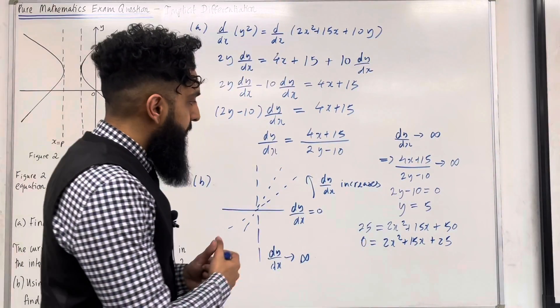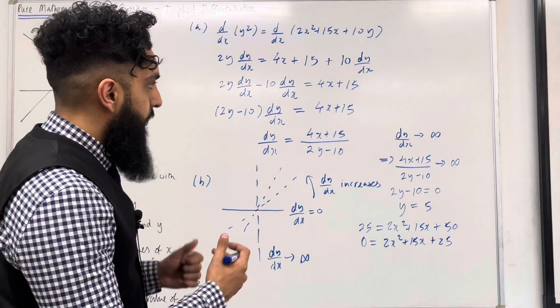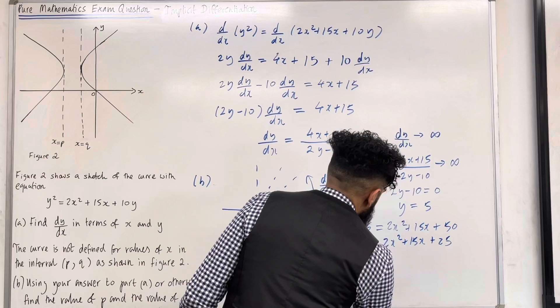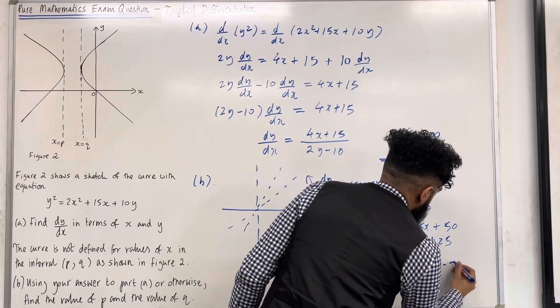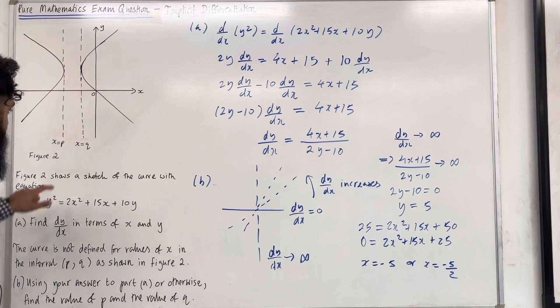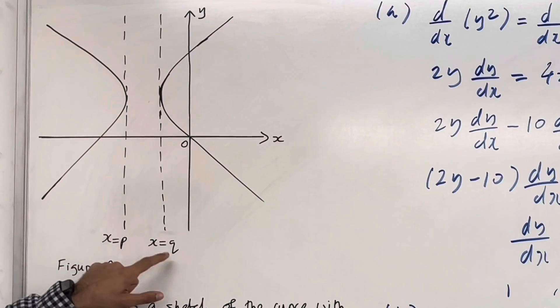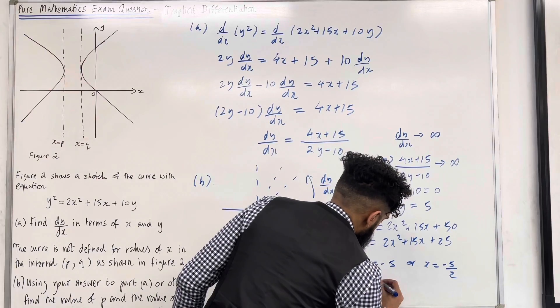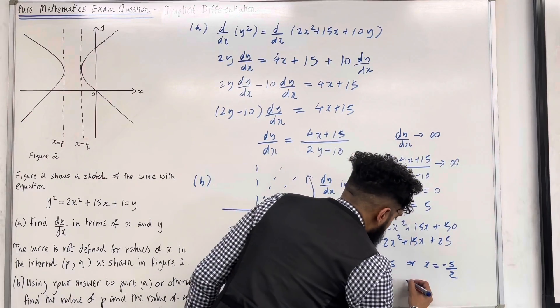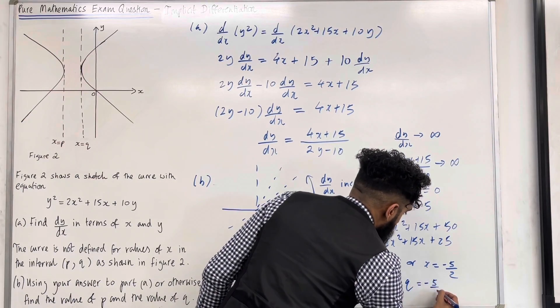Now I need to solve this particular quadratic equation. So if I solve it, I get x equal minus 5 or x equal minus 5 over 2. OK, so this number p is smaller than q. So p has to equal minus 5 and q has to equal minus 5 over 2.